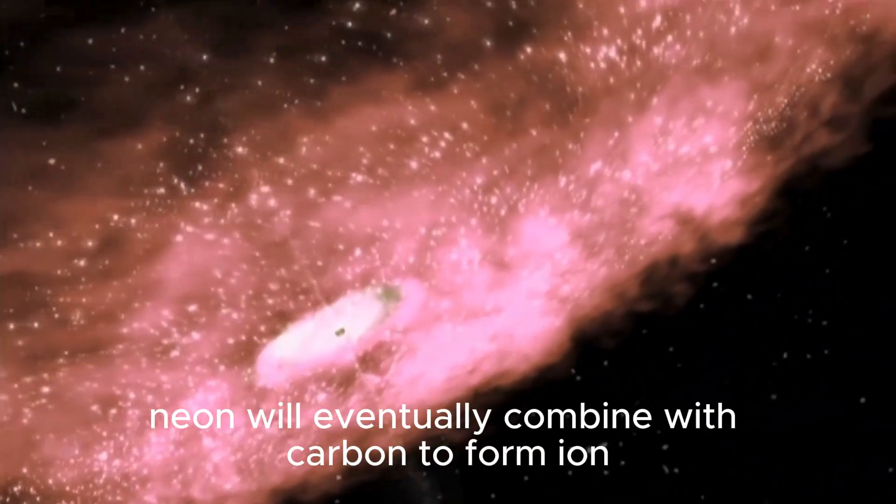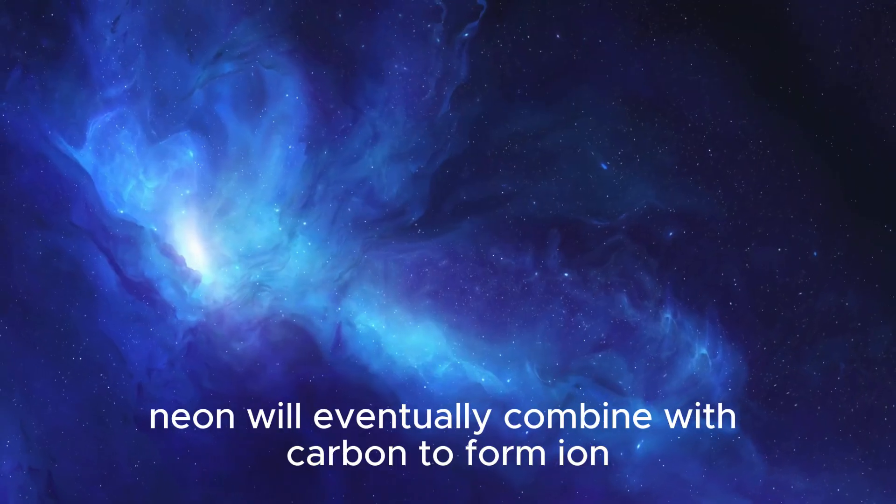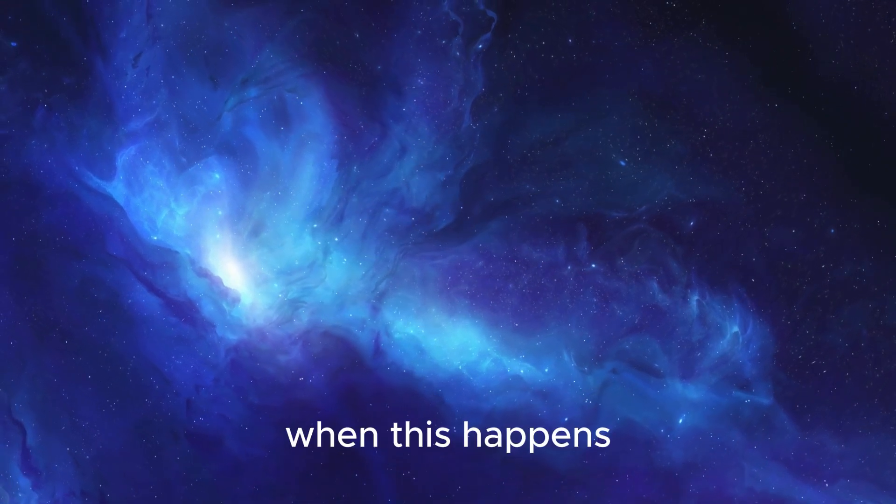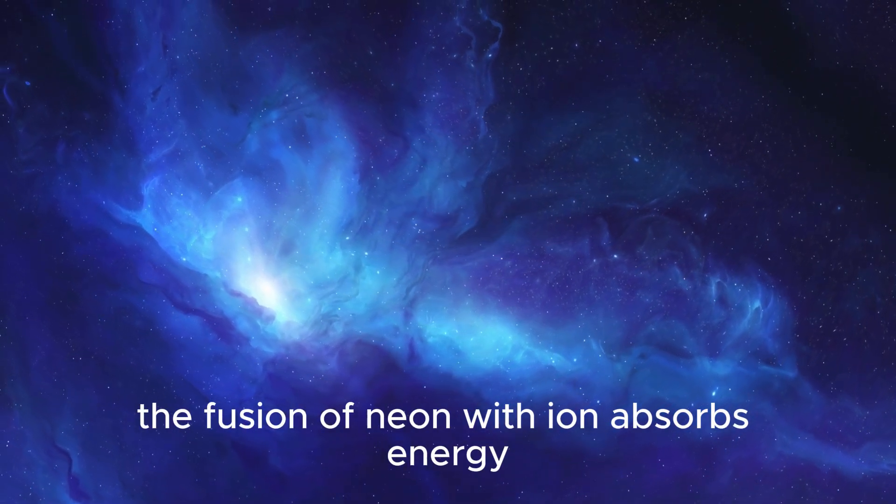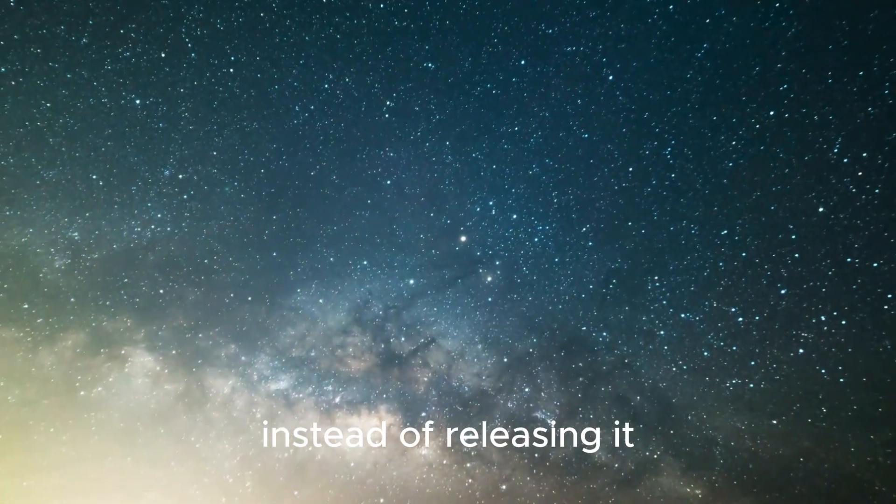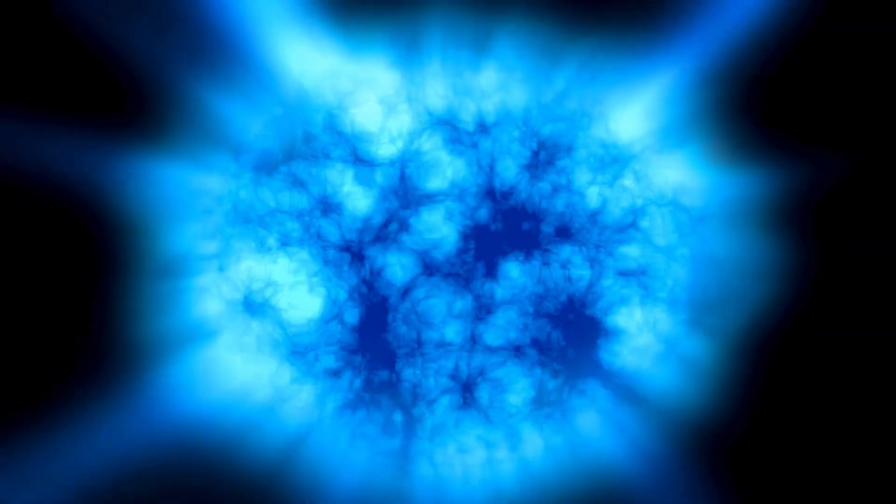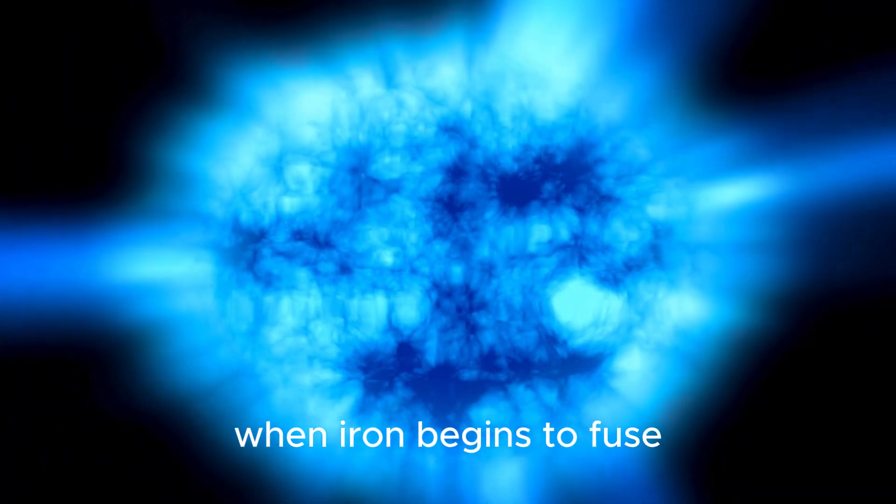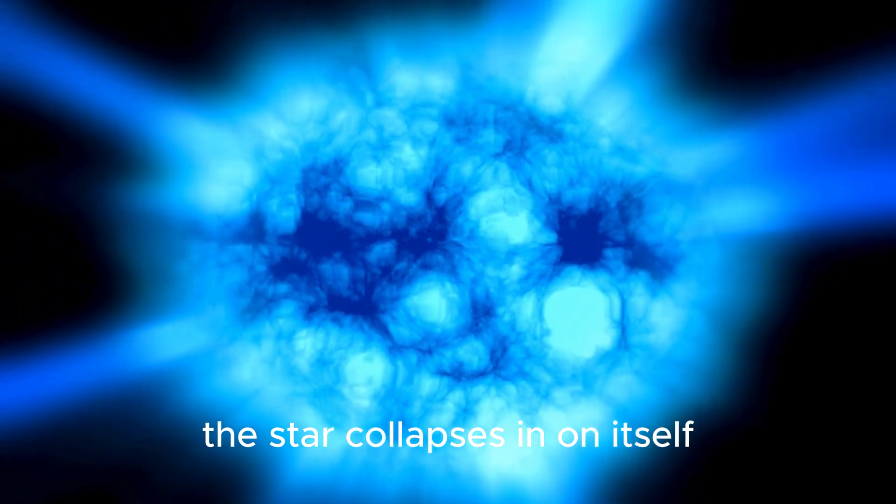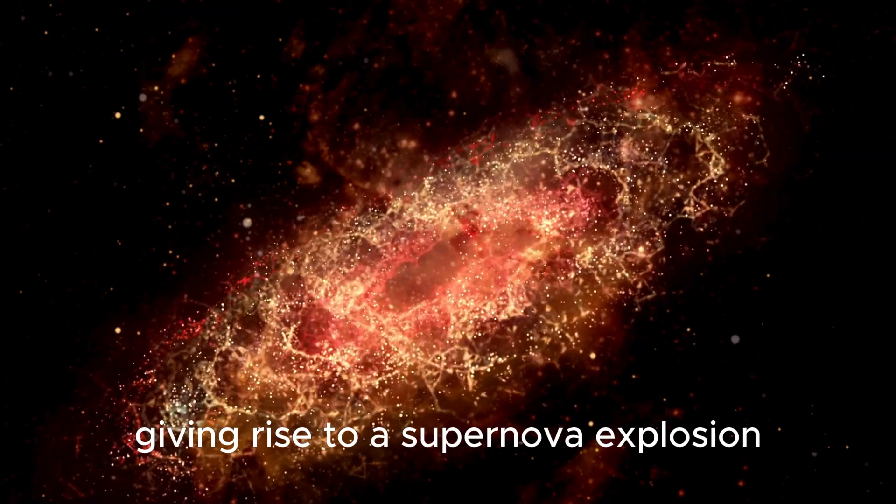After the helium is used up, neon will eventually combine with carbon to form iron. When this happens, the fusion of neon with iron absorbs energy instead of releasing it because there is nothing to oppose the star's very powerful gravity. When iron begins to fuse, the star collapses in on itself, giving rise to a supernova explosion.